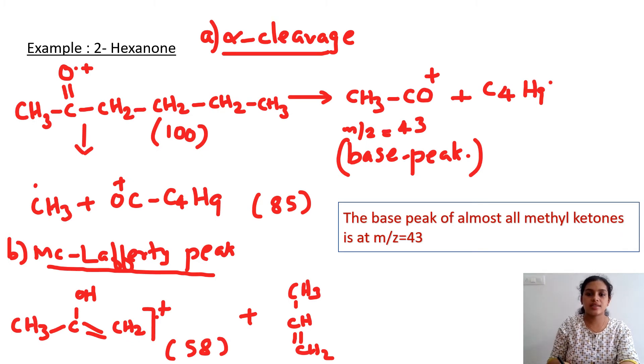I have taken the example of 2-hexanone to explain both alpha cleavage and McLafferty rearrangement. The first fragment, the first peak to be recorded is the molecular ion peak which is at 100. From there, the base peak is obtained at m/z equal to 43, which is due to CH3CO+ fragment.